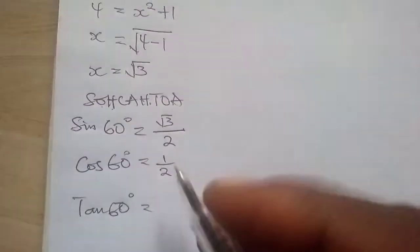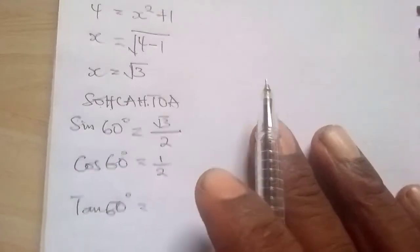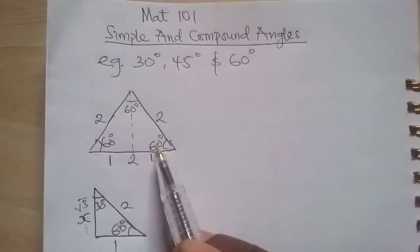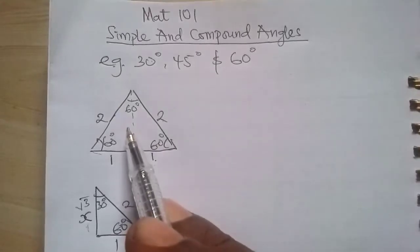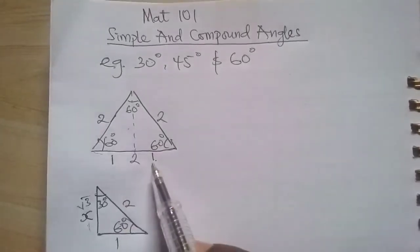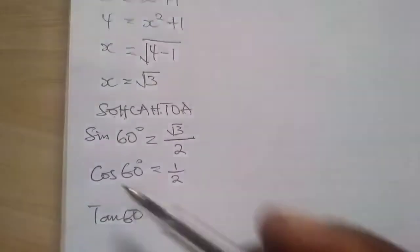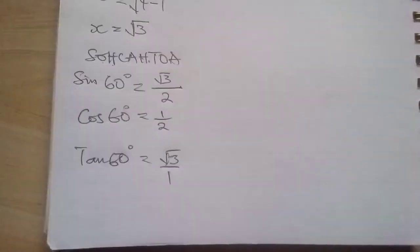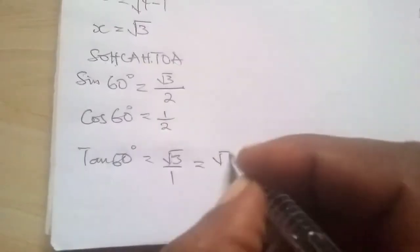So we can also confirm tan 60 degrees. Tan means opposite over adjacent. So if we have opposite of this value, tan 60, opposite is root 3, adjacent is 1. So root 3 over 1, which is the same thing as root 3.